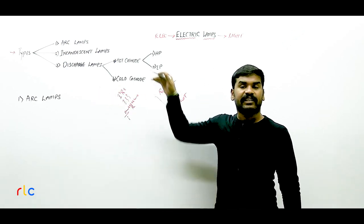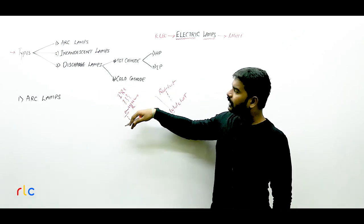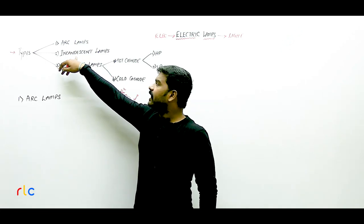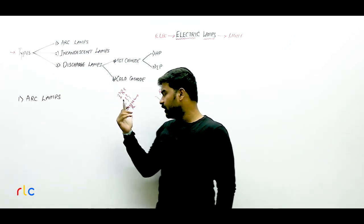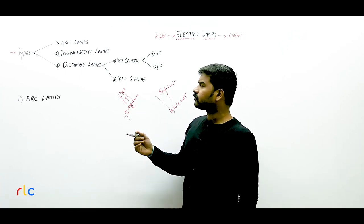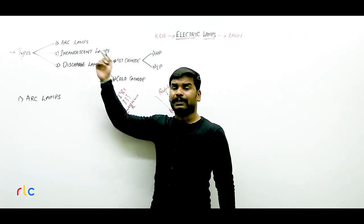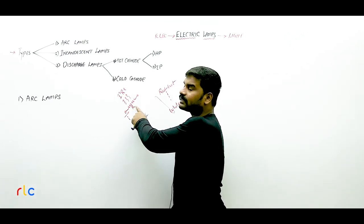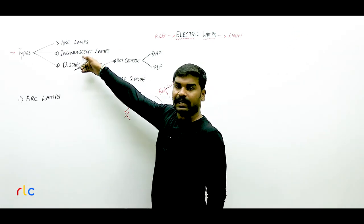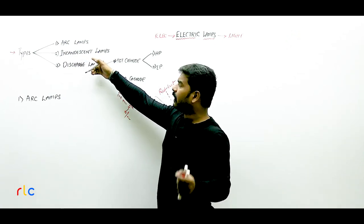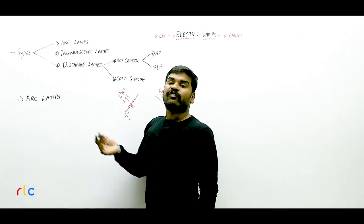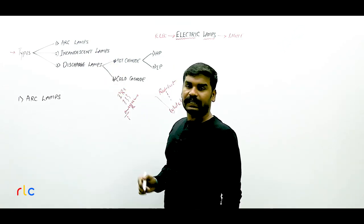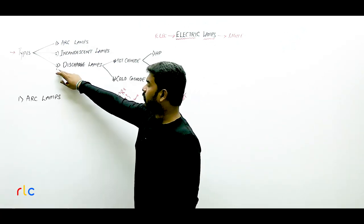By heating a conducting material you are generating light energy out of it — this principle itself is the incandescent principle. For a lamp to work on this principle, you primarily require a resistance. So resistance-based lamps are incandescent lamps. A popularly asked question: the power factor of an incandescent lamp is unity.